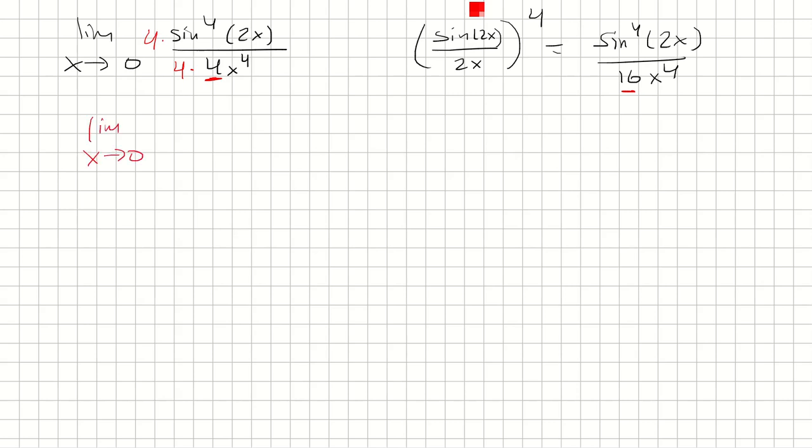So the limit is x approaches 0. So now this 4 is going to come outside. So that's 4 times the limit, and sine to the fourth 2x over 16x to the fourth.